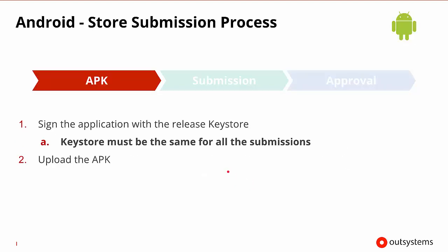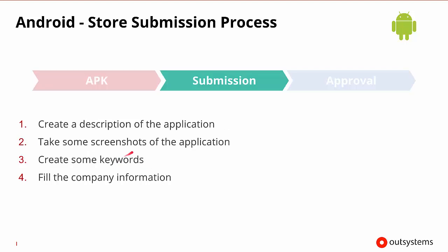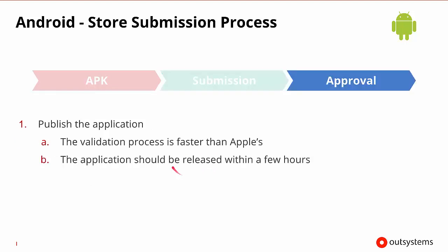The Android submission process is similar. What we need to do is sign the application with a release key store, and the key store must be the same for all submissions of this particular application. Then we upload the APK, which is the name of the application package that Android uses. Once the submission is there, we create a description of the app, take some screenshots, create keywords, and fill in the company application information. Then at the end, we can go ahead and publish the app.